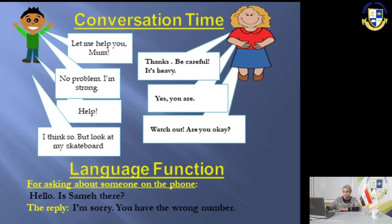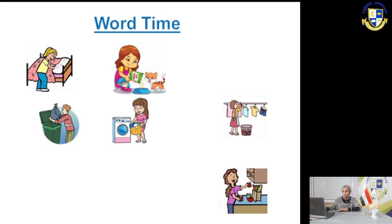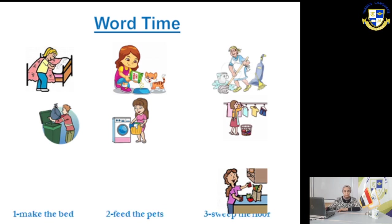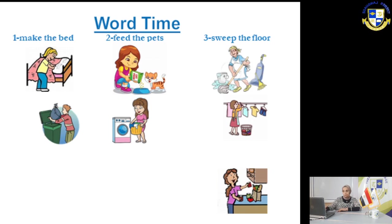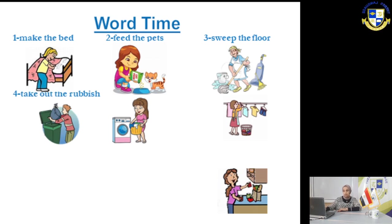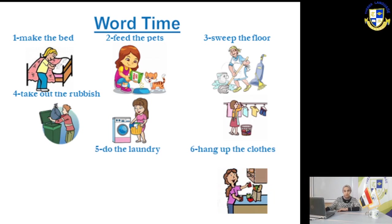Let's go to slide 4 — it's your word time! Number one: make the bed. Number two: feed the pets. Number three: sweep the floor — it means to clean it. Number four: take out the rubbish. Number five: do the laundry — that means you have to clean your clothes.